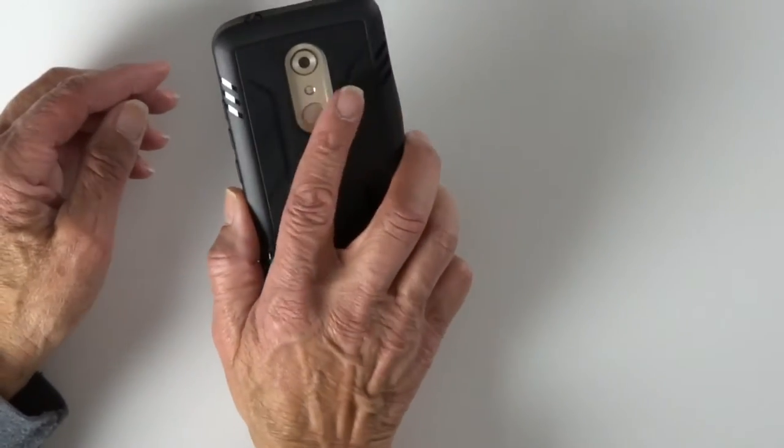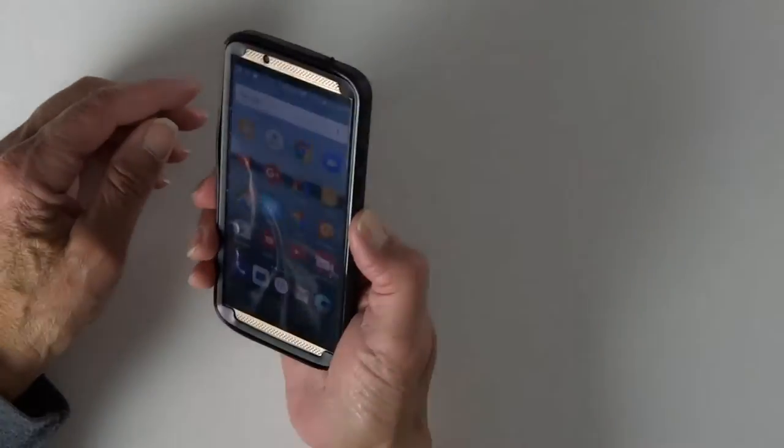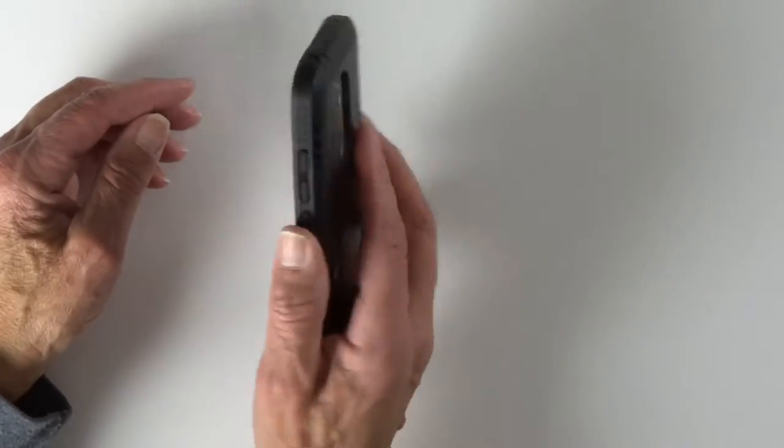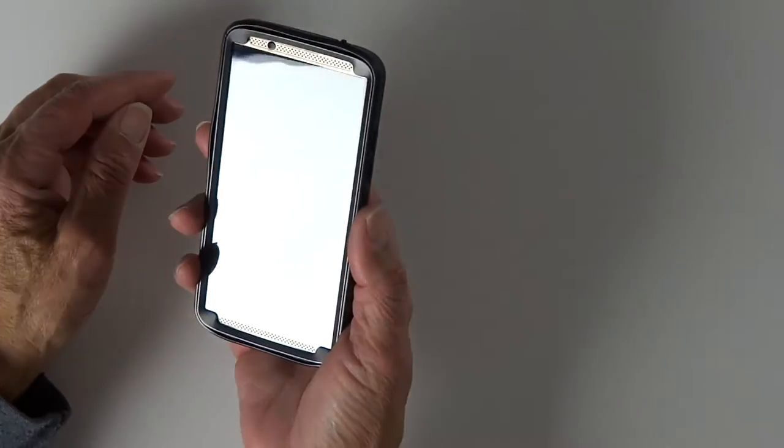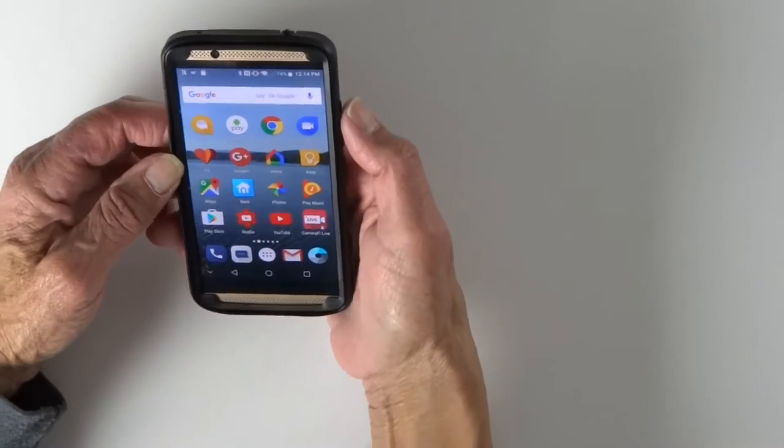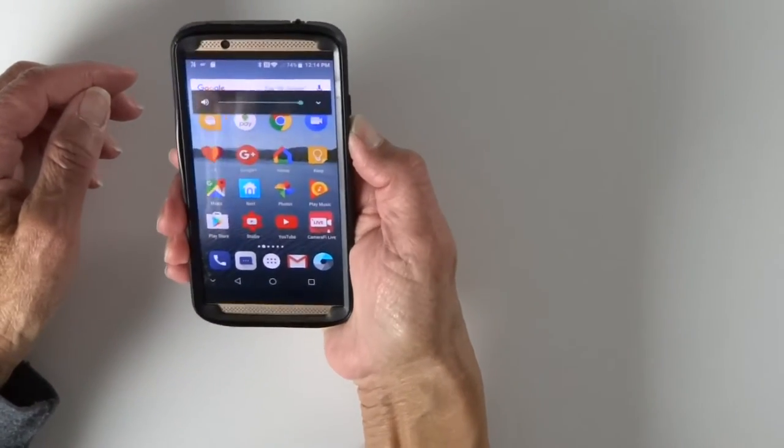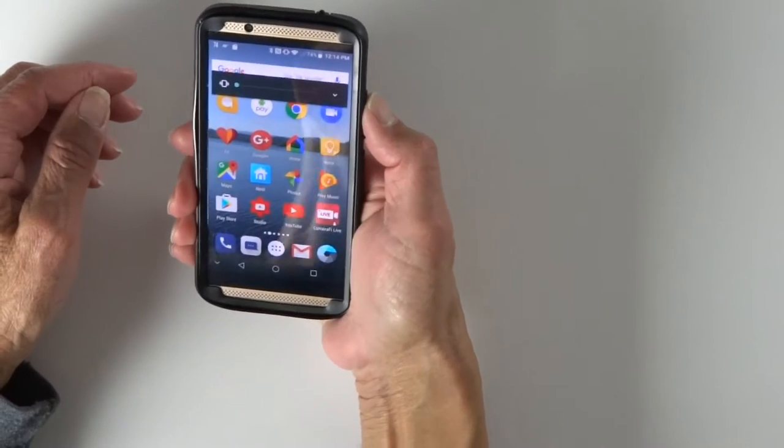You can see the power button works fine. Now the fingerprint sensor, case doesn't interfere at all. Just as fast as it was before. Volume up and volume down buttons work just fine.